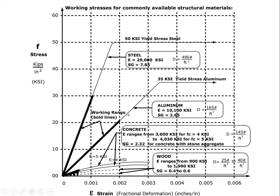We're going to try and focus on using the term fractional deformation. For example, we have concrete and wood, here is 35 KSI aluminum, and 50 KSI steel. In the case of this steel, the two important properties are: one, that it yields at 50 KSI — kips per square inch.